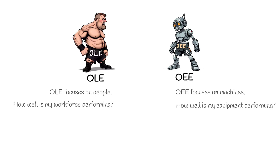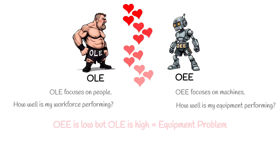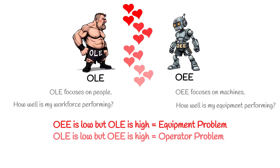Together, they give a complete picture of productivity. If OEE is low but OLE is high, the problem is with the equipment. If OLE is low but OEE is high, the bottleneck might be in training, staffing, or operator efficiency. And if both are low, well, you've got a bigger challenge.